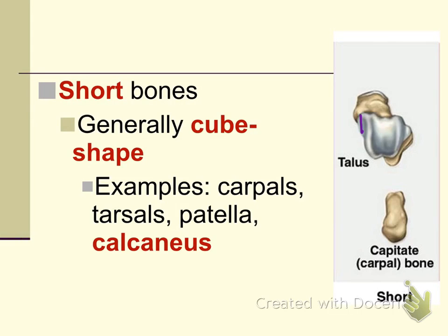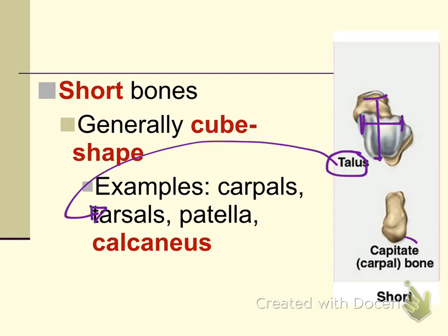The short bone category means the length and width of the bones are relatively equal. Bones in this category include carpals (wrist bones), tarsals (ankle bones), the patella (kneecap), the calcaneus (heel bone), the talus (part of the tarsal bones), and the capitate bone (one of the wrist bones).